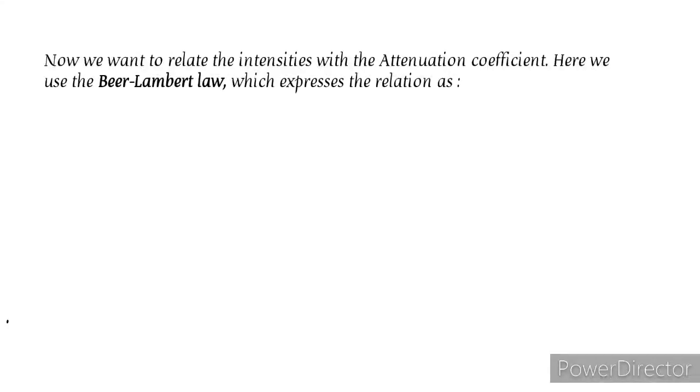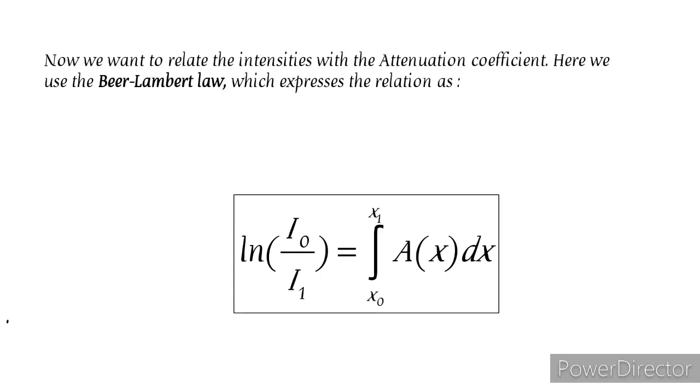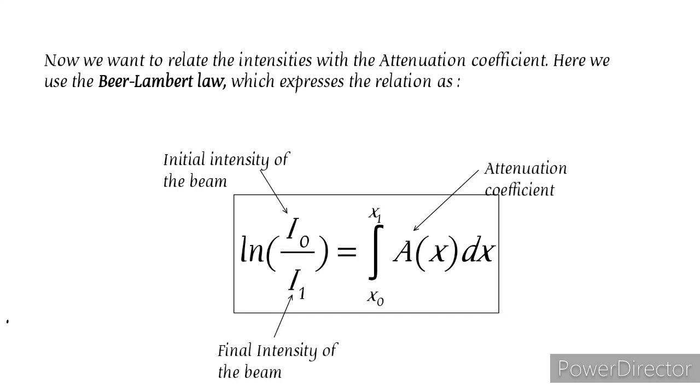Here we slow down a bit. Now we want to relate the intensities with the attenuation coefficient. Here we use the Beer-Lambert law, which expresses the relation as given below. Here I0 and I1 are the initial and final intensities of the beam, and A of X is the attenuation coefficient.